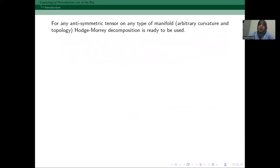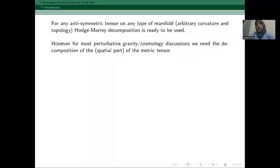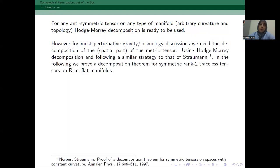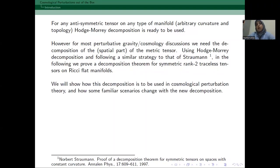Now, this was the case for a vector. And actually, for any anti-symmetric tensor, we can use the Hodge-Morrey decomposition. But generally, for cosmological perturbation theory, we need the decomposition of the spatial parts of the metric, which is a rank-2 symmetric tensor. So, what I do in this work is I use the Hodge-Morrey decomposition and I follow a similar strategy in a paper of Straumann, and I prove a decomposition theorem for symmetric rank-2 traceless tensors on Ricci flat manifolds. And then I will try to discuss with you how this decomposition can be used in cosmological perturbation theory and solve some familiar scenarios with this new decomposition.